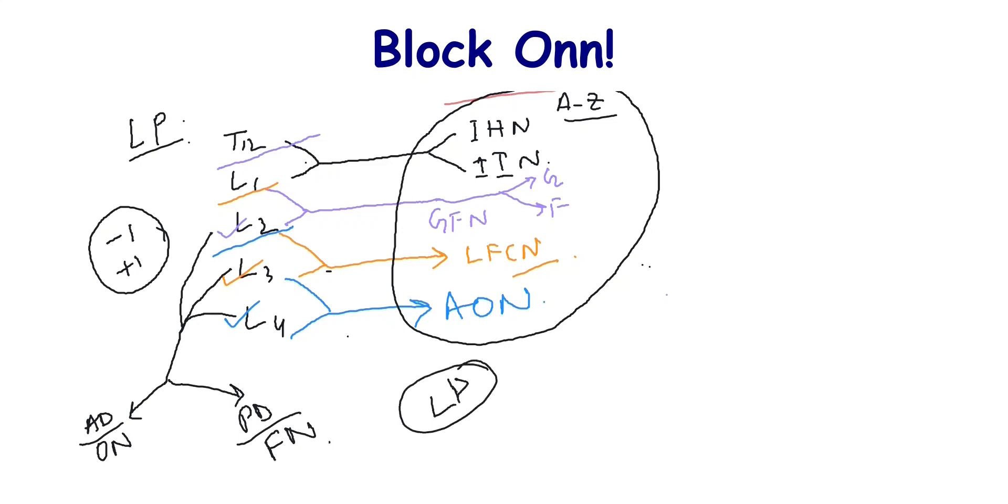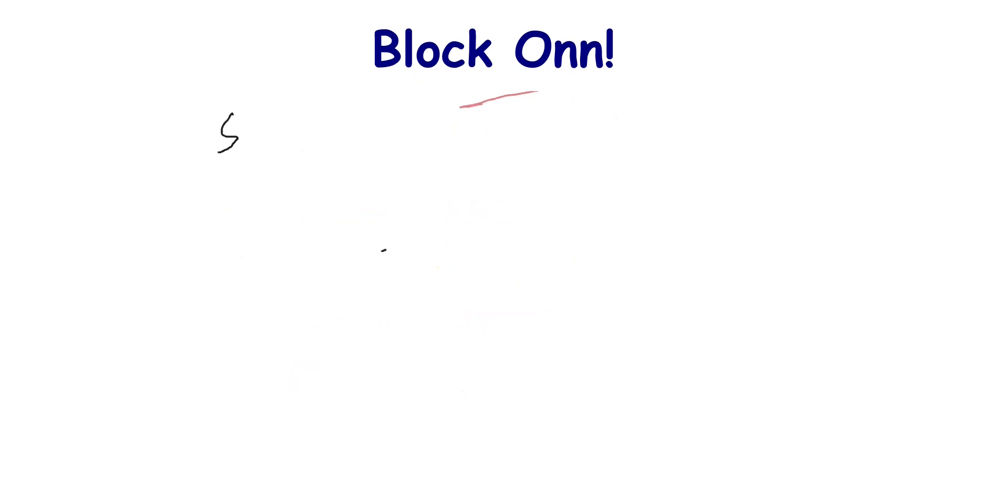This L4 along with the L5 ventral primary rami takes part in the sacral plexus formation. Now we will discuss about the sacral plexus anatomy.